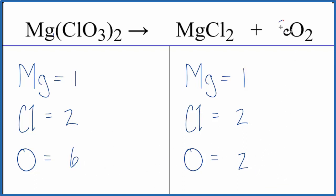We could put a coefficient of three in front of the O2, two times the three, that gives us six, and we're done. This equation is balanced.